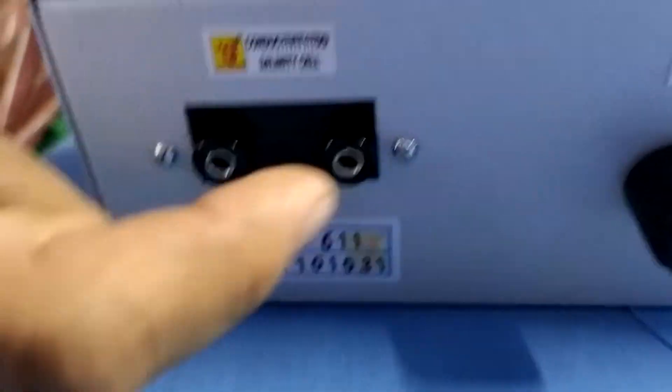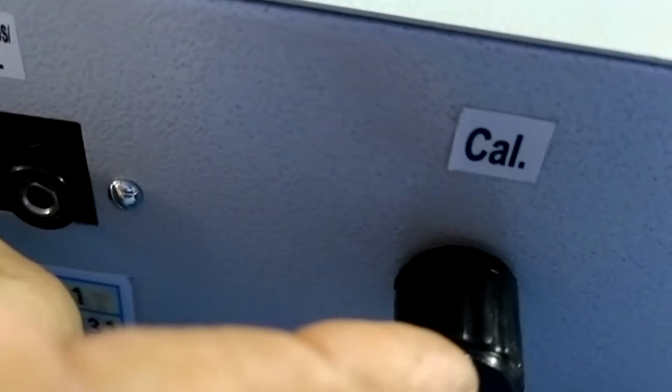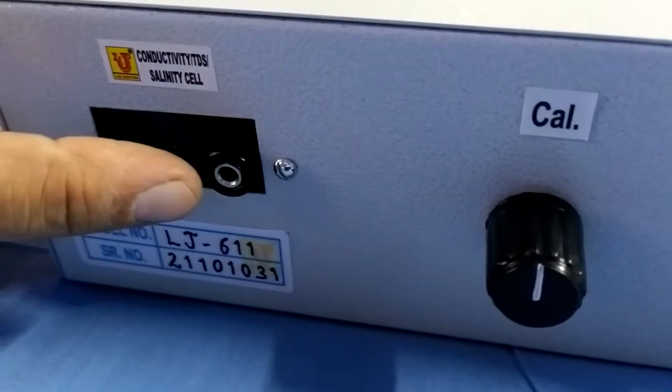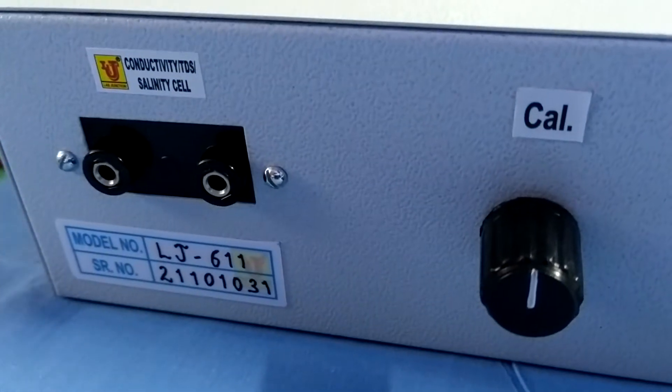In the back side, one control is for check position. One is switch off. And third one is Banana Sockets for Conductivity Cell.